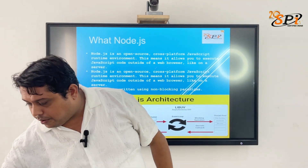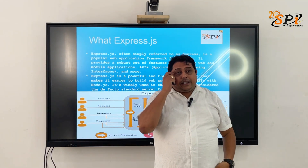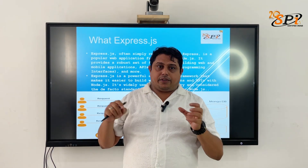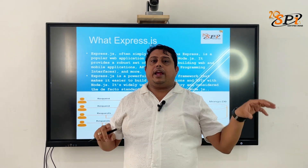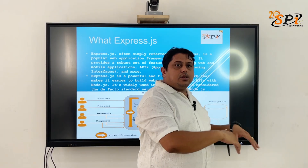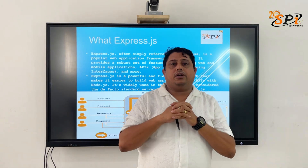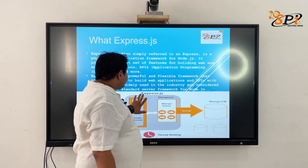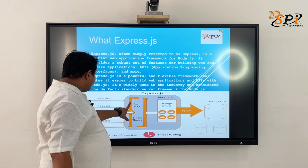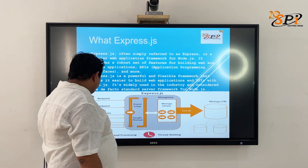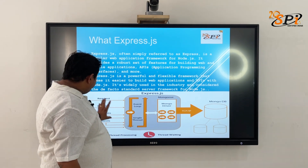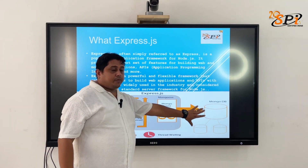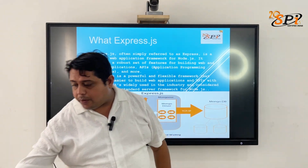Express.js follows the client-server architecture. When you work on internet applications, the client sends an HTTP request and the server sends back an HTTP response. Express.js is the web framework that accepts HTTP requests and returns corresponding responses. Express.js also internally connects with MongoDB to retrieve data, forming the complete back-end layer of the MERN architecture.